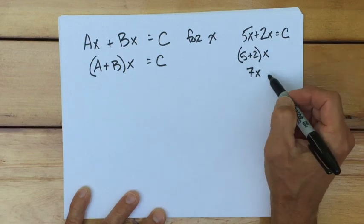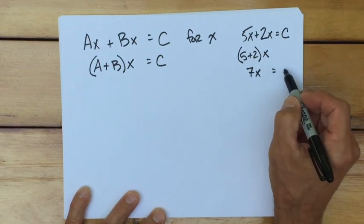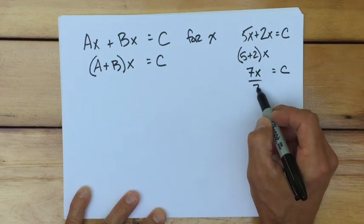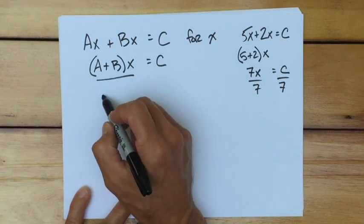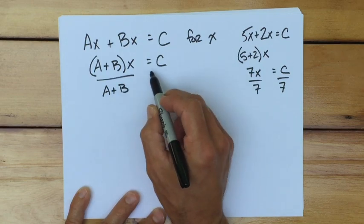And then, well, in this step, if we wanted to continue solving for x, we would divide both sides by 7. Here, I'm going to divide both sides by whatever is multiplying the x, the coefficient. In this case, the coefficient is a plus b.